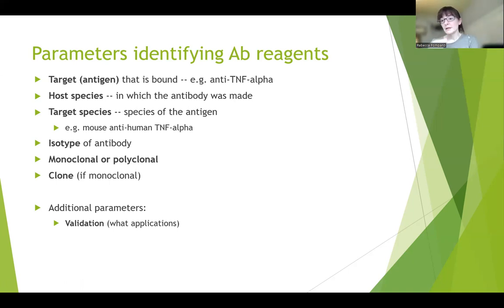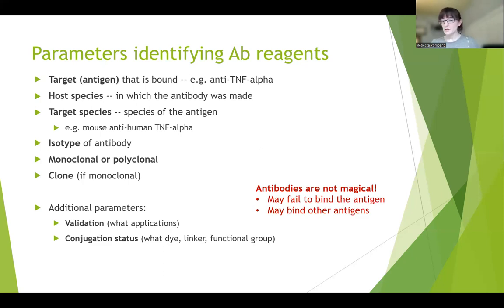Beyond that, antibodies also should be characterized either by you as a user or by the vendor in terms of what applications they've been validated for. So, for example, is this going to work in an assay like ELISA, where your antigen is in its fully native state? Or is it made for something in Western blot, where the antigen has been denatured? And so, in some cases, an antibody will work in one of those contexts and not the other. So it's important to pay attention to what applications it was validated for. And finally, is it conjugated to anything? So, for example, does it have a fluorophore attached to it or a biotin group attached to it for downstream use? And so all of these things are things that you would want to pay attention to as you're selecting out the right reagents.